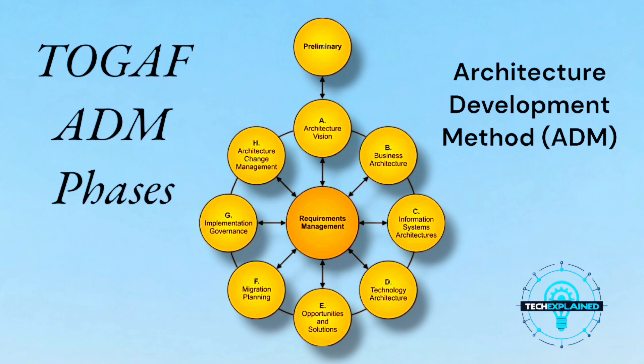Let's say you're planning to build a dream house — not just any house, but one with a smart home system, a pool, and maybe even a robot butler. Now imagine diving into that project with no plan, no blueprints, no budget, no idea what you're building or how it'll all fit together. It's chaos. That's where TOGAF's Architecture Development Method, or ADM, comes in. It's like the blueprint for building not just houses, but organizations and their systems, step by step.